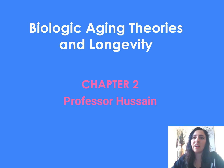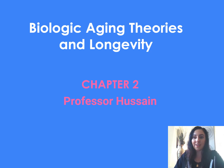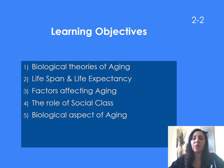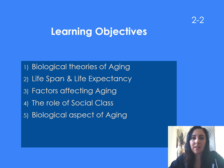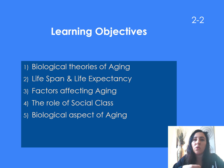Hi everyone, welcome back to the Health and Wellness for Older Adults course. This is lesson two, and today we're going to be looking at biological and aging theories of longevity. The goals of this lecture include biological theories of aging, lifespan and life expectancy, factors that affect the aging process, and the role of social class in aging.